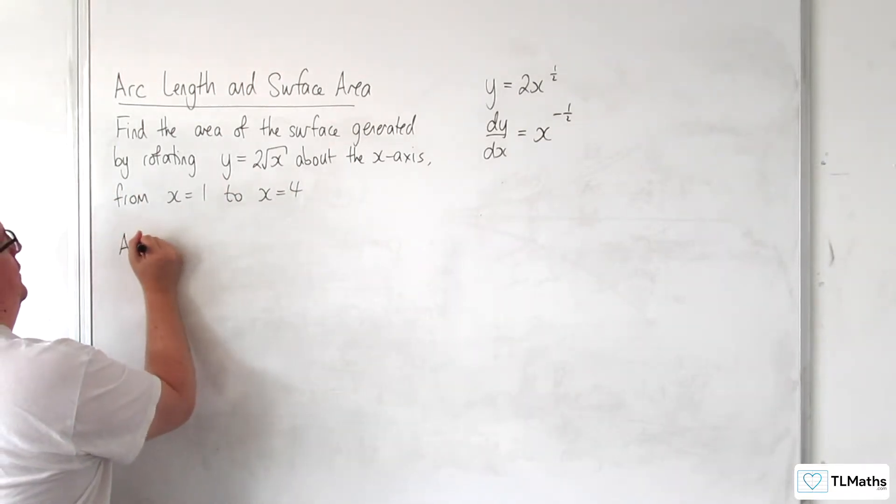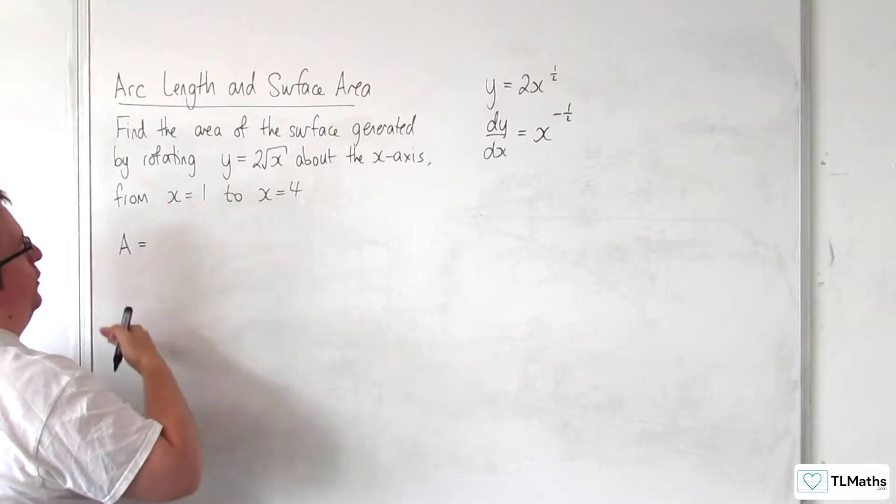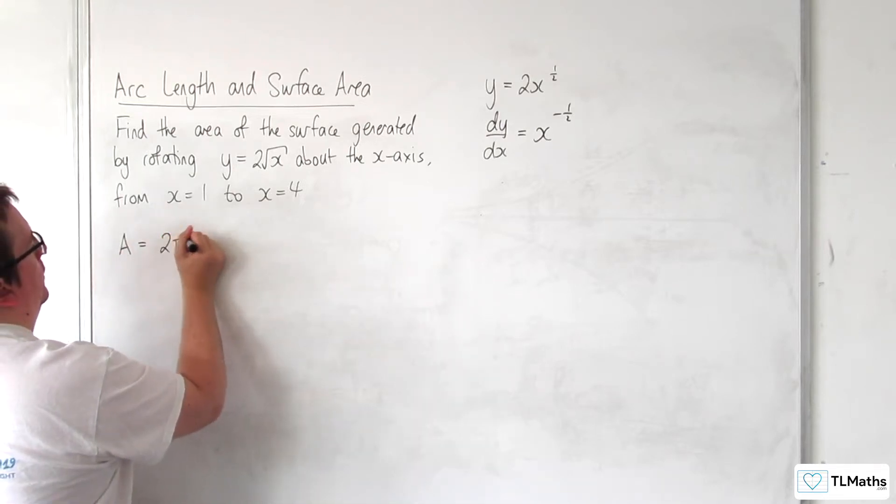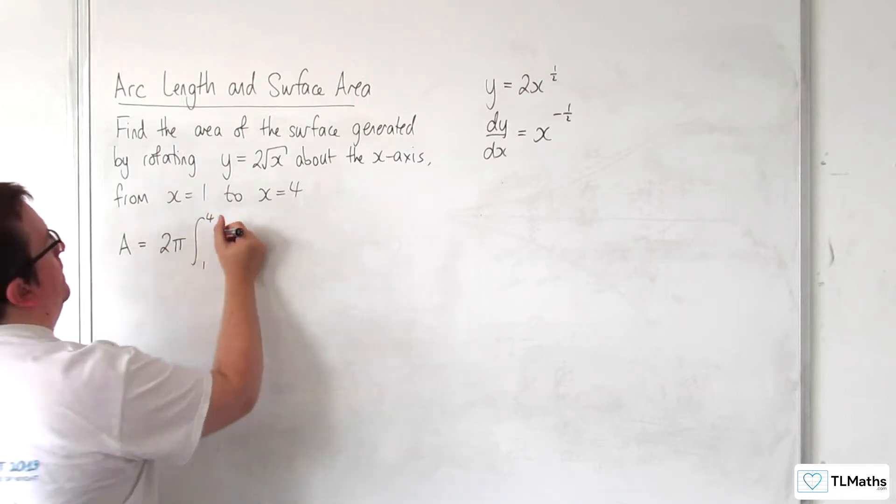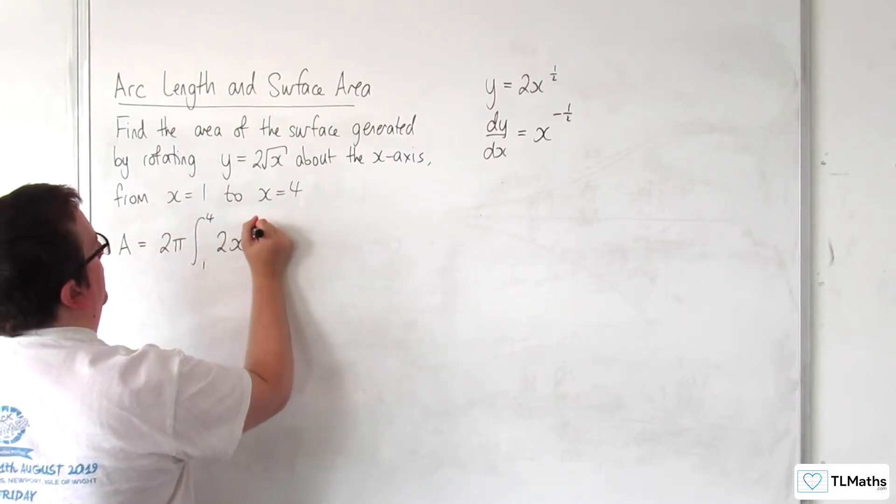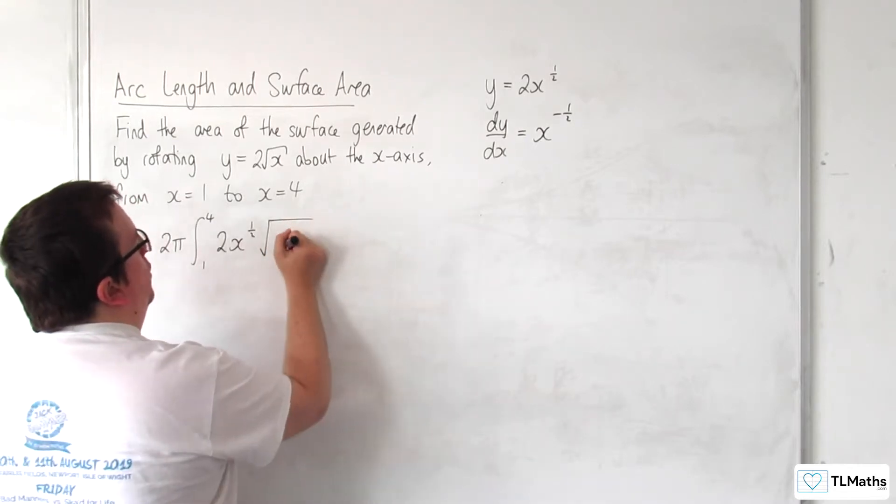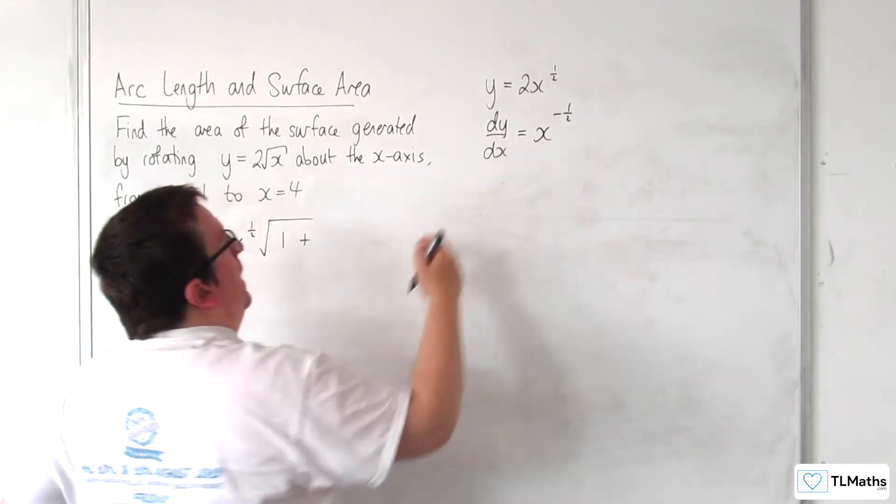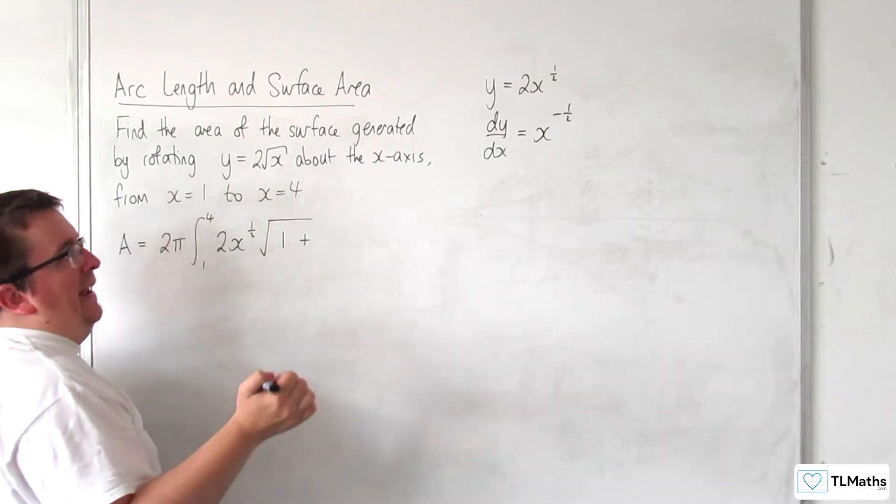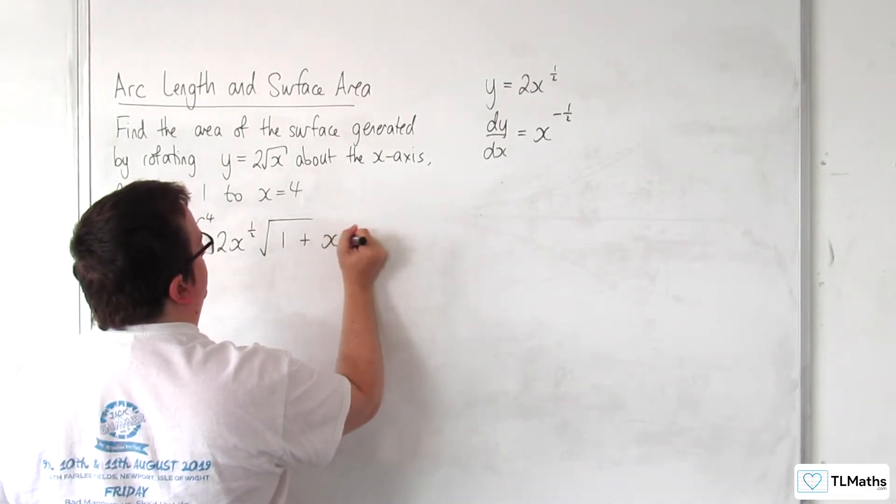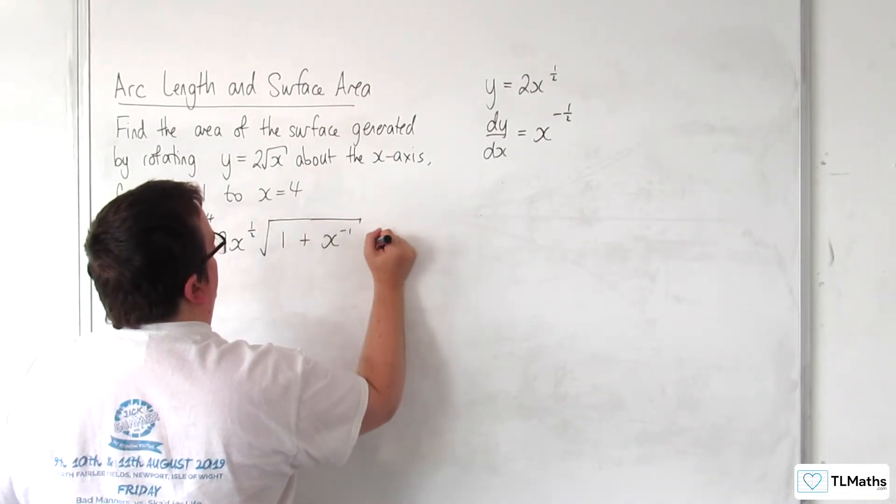The area is going to be equal to 2 pi times the integral between 1 and 4 of y, so 2x to the half, times by the square root of 1 plus this squared, which is just x to the minus 1 dx.